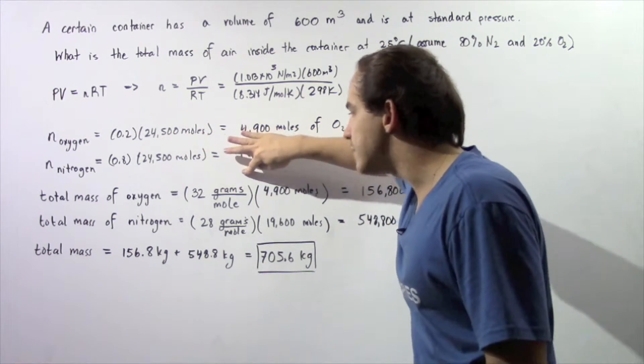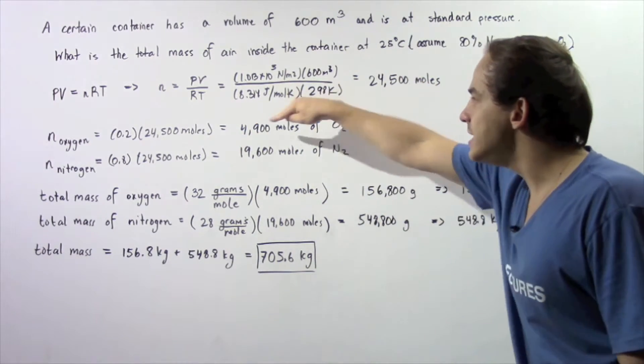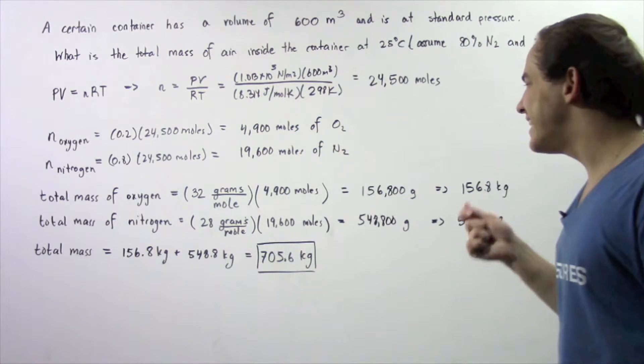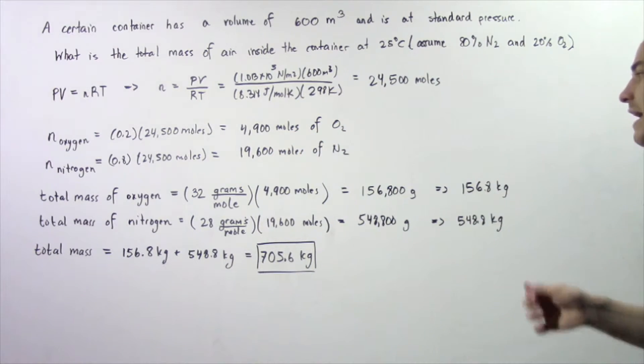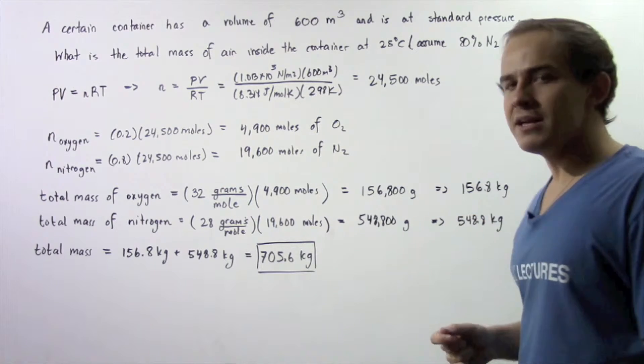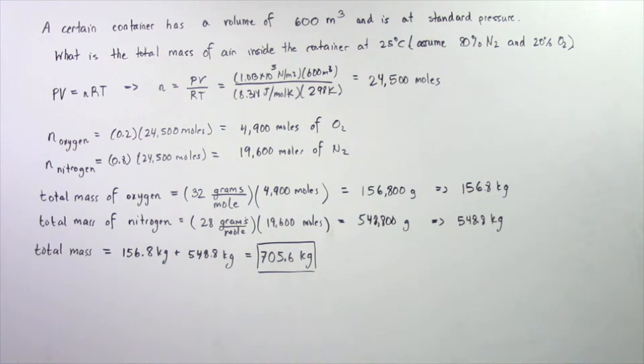So 32 grams in 1 mole of diatomic oxygen multiplied by the number of moles of oxygen, 4,900, gives us 156,800 grams of oxygen. And to convert this to kilograms, we divide by 1,000 and we get 156.8 kilograms.